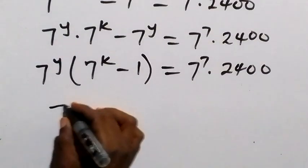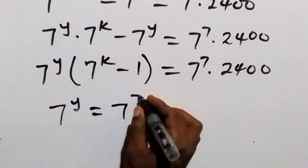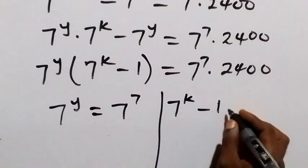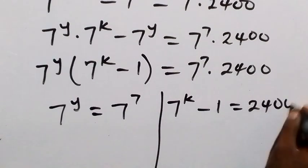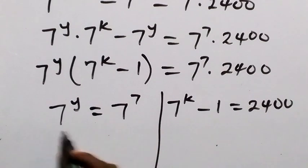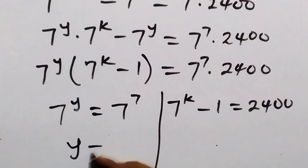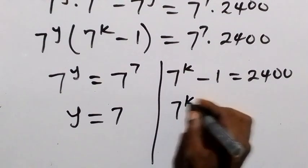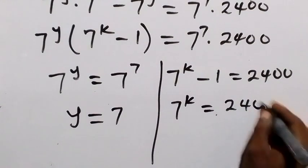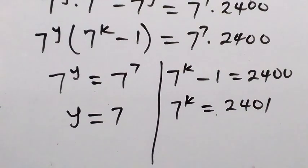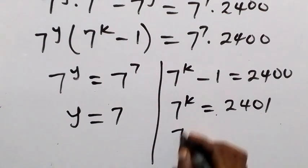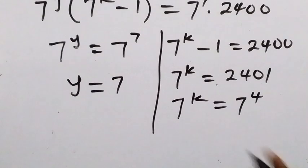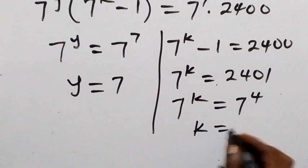So we have 7 raised to power y equals 7 raised to power 7 — since the bases are equal, we equate the powers, giving y equals 7. On the other side, 7 raised to power k minus 1 equals 2400, so 7 raised to power k equals 2401, which equals 7 raised to power 4. Again equating powers, k equals 4.